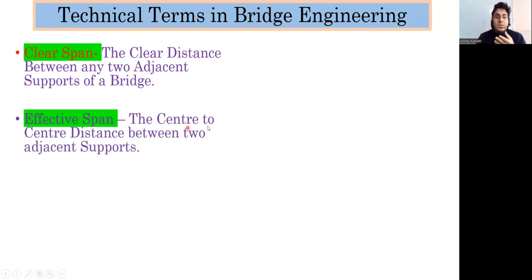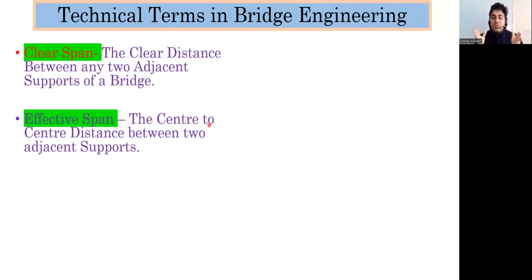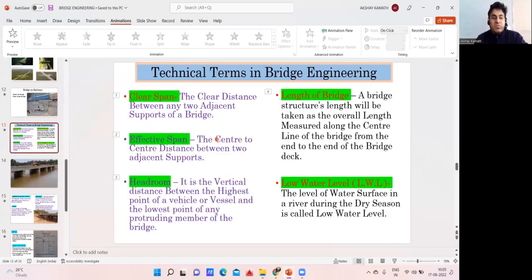The next term is effective span — the center-to-center distance between any two adjacent supports is called the effective span. When I say effective span it is from center to center, and when I say clear span it is between the outer faces of the two supports.